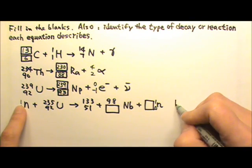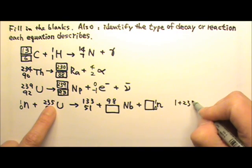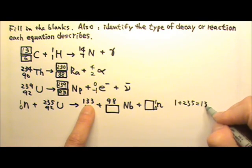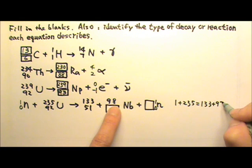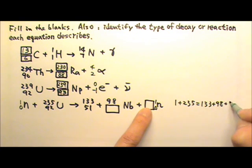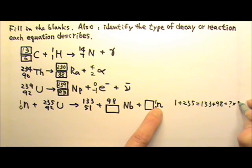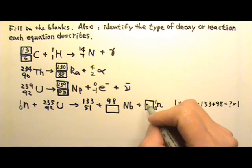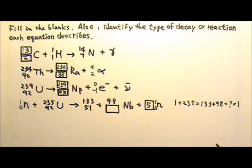And here I have 1 plus 235 equals 133 plus 98 plus something times 1. So we can solve for this question mark, and it turns out to be 5.